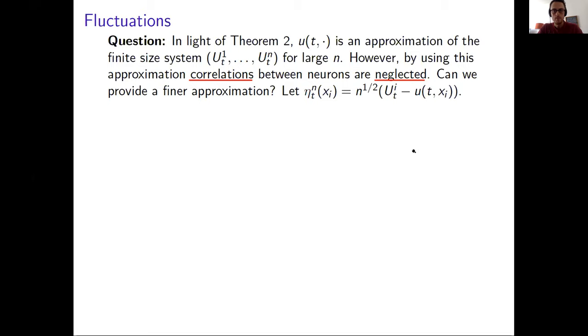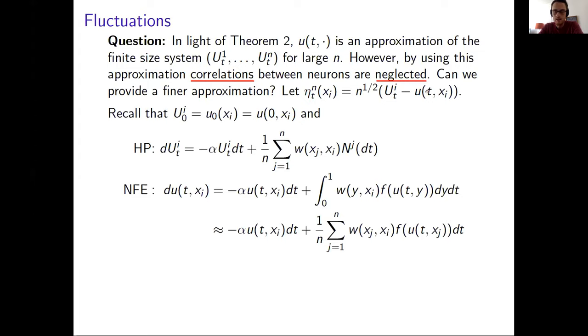So let me introduce some notation. I will compare U^n(t) minus the solution of the Neural Field Equation, and then I'm scaling this by square root of n, amplifying this difference, and I call this eta_n(t,x_i). And my idea here is to try to give a heuristic argument to derive an equation that this eta should satisfy when n is very large. So recall that at time zero, these two guys are equal, so eta at zero will be zero.